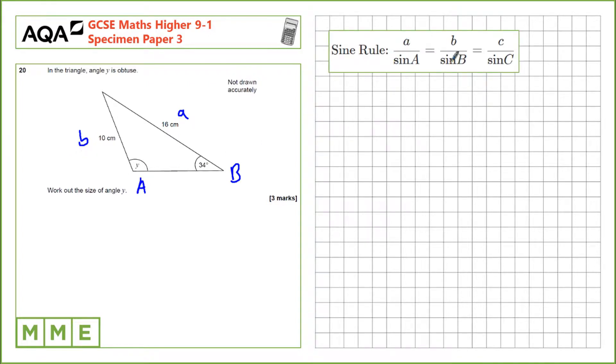So using the sine rule we just need to substitute into here. So let's go for that. So 16 over sine of A. A is what we're trying to calculate. It is 10 over the sine of B, which is 34 degrees.